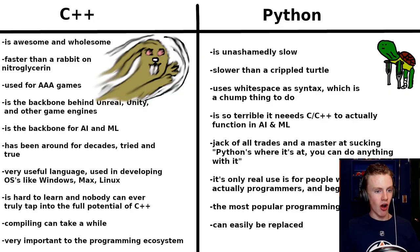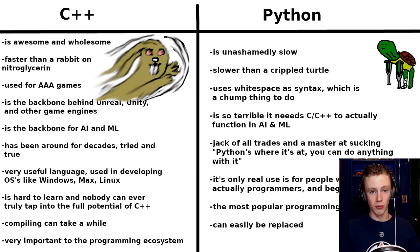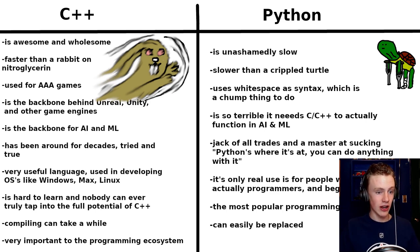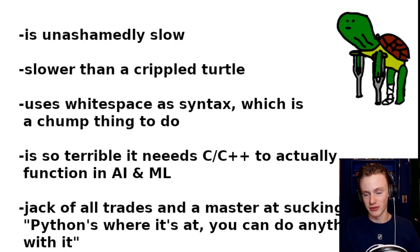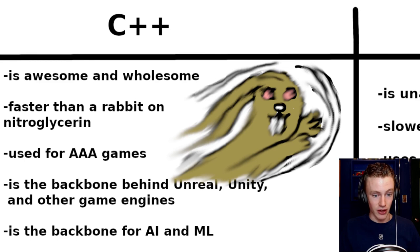For the next segment, I've prepared a comparison table that gives us more information on C++ and Python. C++ is awesome and wholesome. Python is unashamedly slow — it makes no bones about it. Python is slower than a crippled turtle, whereas C++ is faster than a rabbit on nitroglycerin. That turtle is not going anywhere anytime soon, but that rabbit is doing things. He's going places.